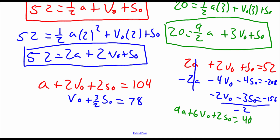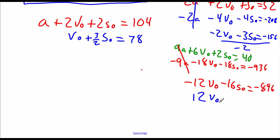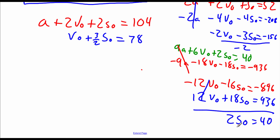Just multiplying everything by two. Then we need to get rid of those nine a's, so I'm going to take the red equation and multiply everything by negative 9, giving negative 9a minus 18 v-sub-0 minus 18 s-sub-0 equals negative 936. Adding those equations together, the a's cancel and we get negative 12 v-sub-0 minus 16 s-sub-0 equals negative 896. Now we take the blue equation and multiply by 12, giving 12 v-sub-0 plus 18 s-sub-0 equals 936. Adding those up, the v-sub-0's cancel. We get 2 s-sub-0 equals 40, so s-sub-0 equals 20.